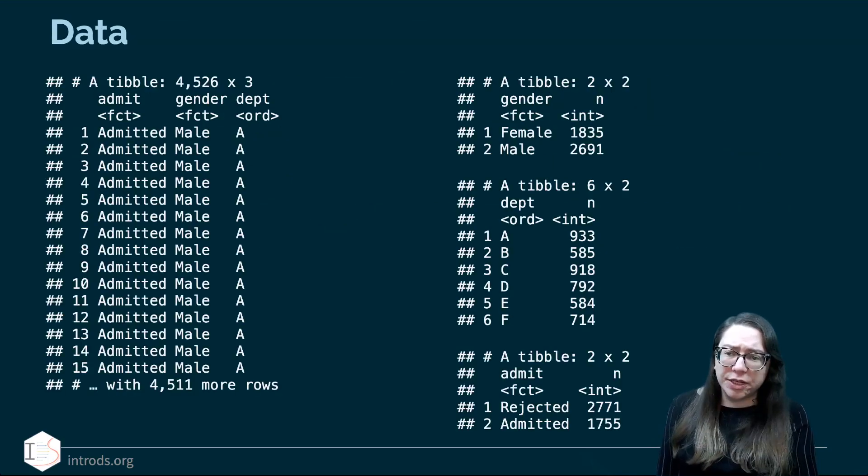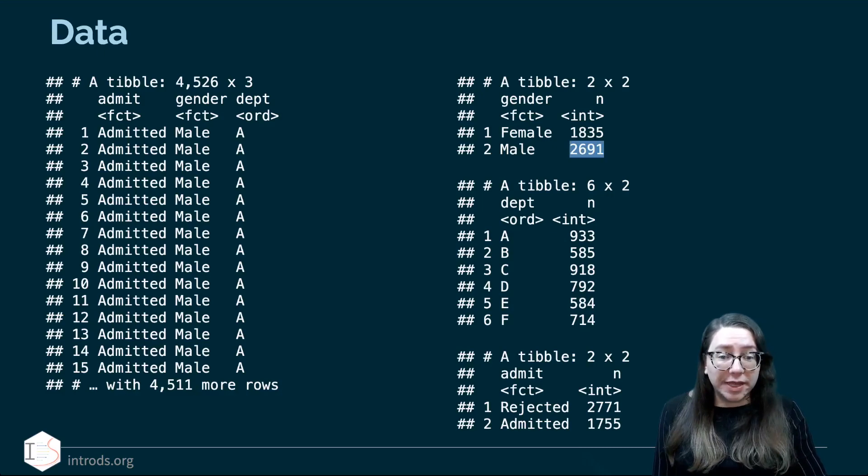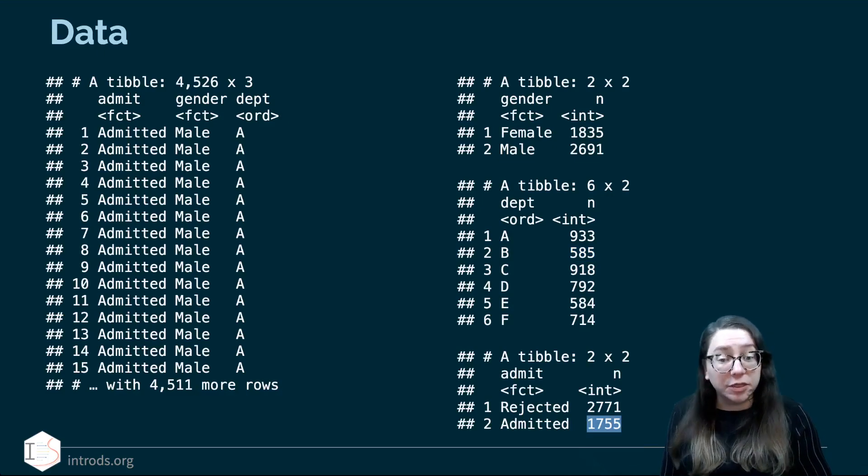Here's what the data looks like. In our original dataset we have 4,526 rows and three columns - that's how many applicants we're looking at. We know whether they were admitted or rejected, what their gender was coded as male or female, and which department they applied to. We can take a look overall at the number of males and females. We can see overall that there are more males in the dataset than females to begin with. We can take a look at the breakdown by departments. Some departments are bigger than others. And we can also take a look to see at the overall admission rate. So 1,755 of the applicants were admitted and 2,771 of them were rejected.